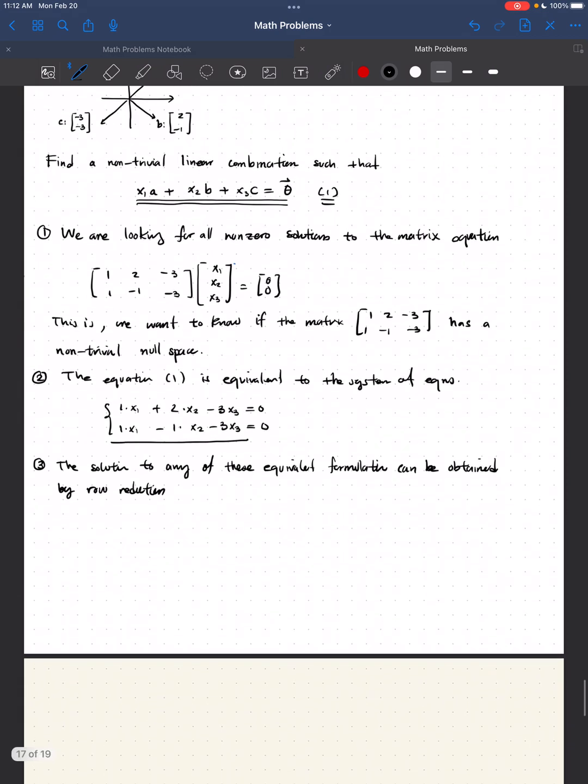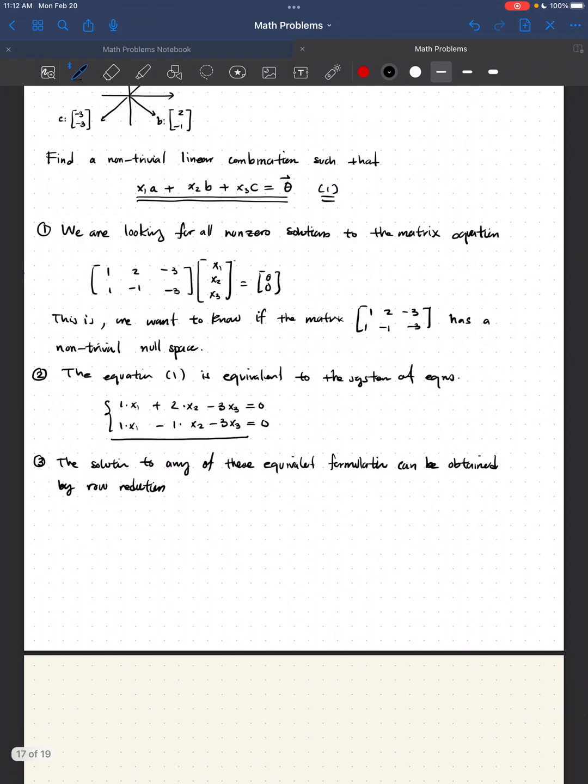In this case, it's homogeneous, so there should be at least one solution. But the question is if there's others, other than the trivial one, other than the zero solution. So let me start. Let's reduce. And I'll start with the matrix [1, 1; 2, -1; -3, -3], augmented by [0, 0], representing the system that I'm underlining here.